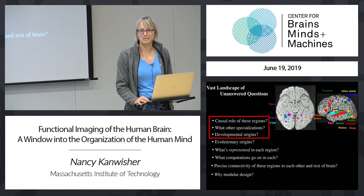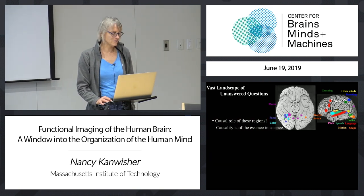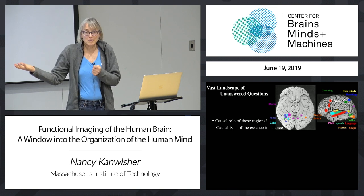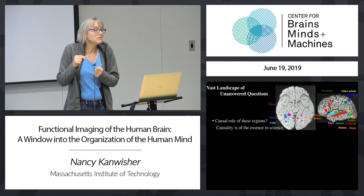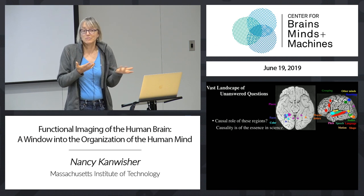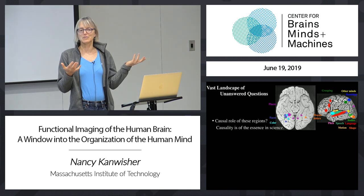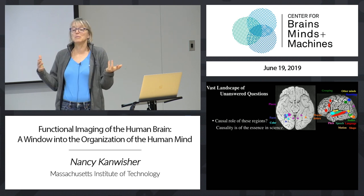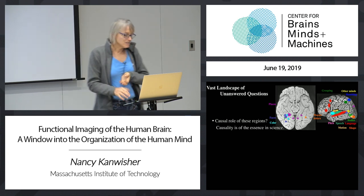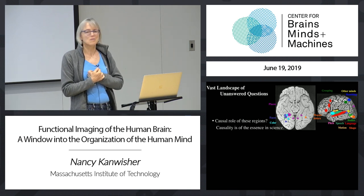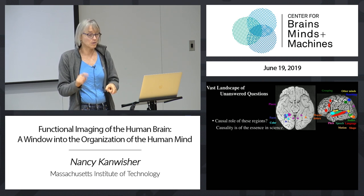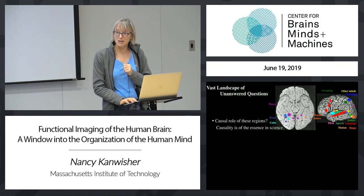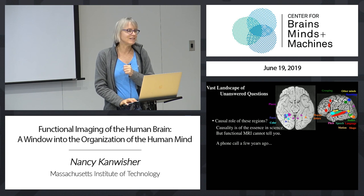Functional MRI doesn't tell us that a region is causally involved in a mental process — maybe you could knock it out and nothing would happen. We need to know causal roles. I got a phone call from a collaborator about a patient in Japan awaiting neurosurgery for drug-resistant epilepsy. When drugs don't work for epilepsy and it's crippling, people sometimes elect neurosurgery — they find the seizure focus and cut it out. Neurosurgeons open the skull, place electrodes directly on the brain surface to localize the seizure and map functions they want to avoid damaging.